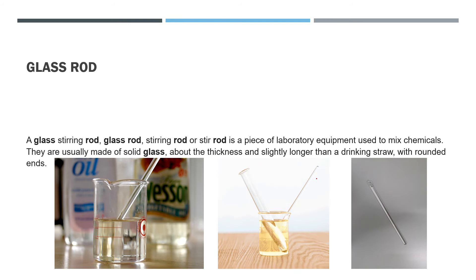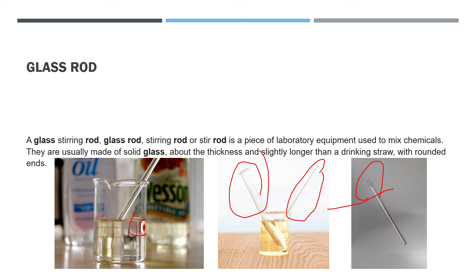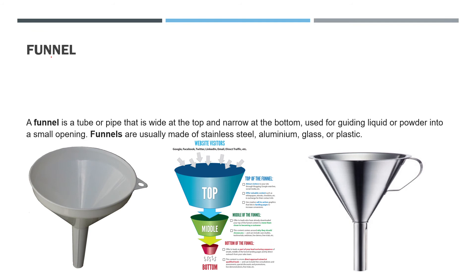Glass rod: it is used to mix and stir chemicals. You can see this is a glass rod next to a test tube. It is longer than a straw — just a little bit longer — and it has rounded ends, unlike a straw.